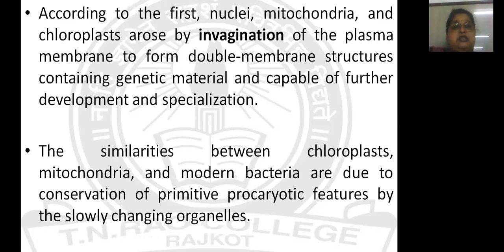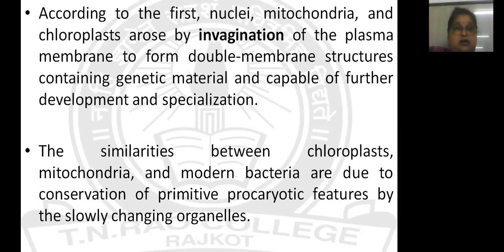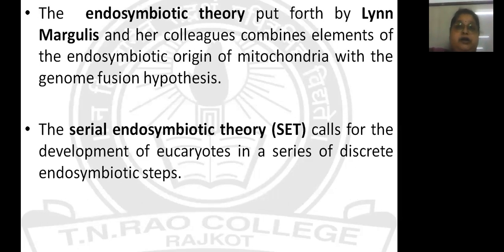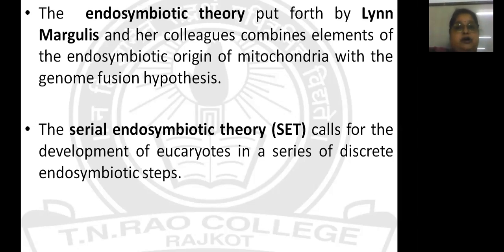The first theory says that due to invagination of the plasma membrane, internal membrane structures like nucleus, mitochondria, and chloroplasts formed within the prokaryotic cell, eventually converting into double membrane structures containing genetic material, with each organelle specialized for a specific function. However, the similarity between mitochondria and chloroplasts and modern bacteria does not fully support membrane invagination theory. A new theory called the endosymbiotic theory was put forward, first proposed by Lynn Margulis, combining endosymbiotic origin of mitochondria with the genome fusion hypothesis — collectively called the serial endosymbiotic theory — calling for development of eukaryotes in a series of discrete endosymbiotic steps.